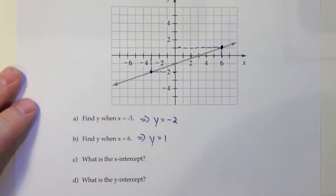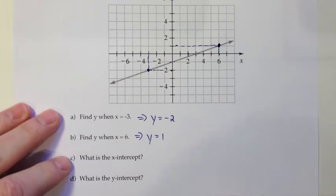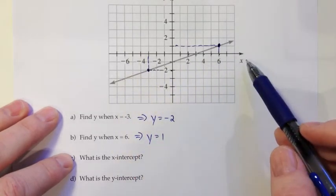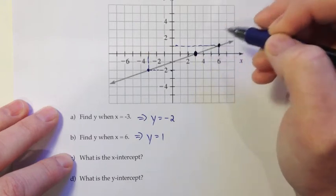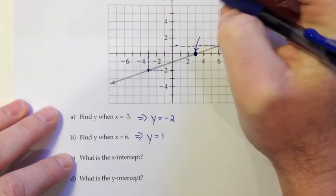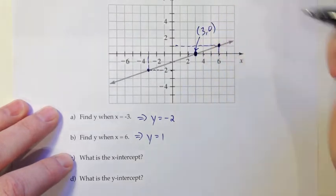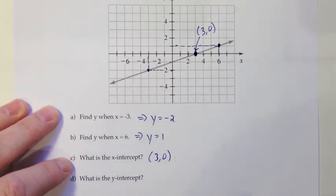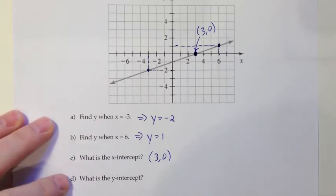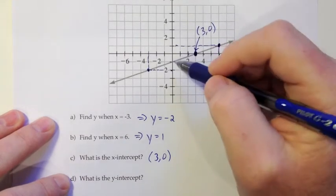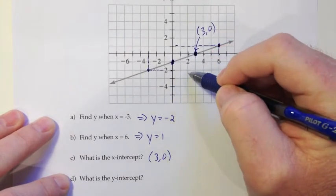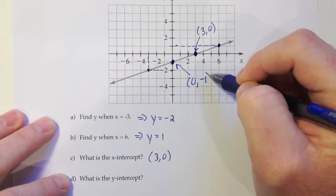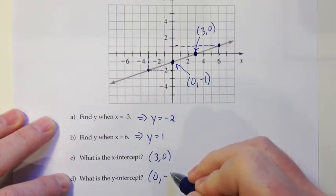And next, they want us to find something called the x-intercept and the y-intercept. So the x-intercept is the ordered pair where our linear model intersects the x-axis. So the x-intercept seems to be this point right here. And if we were to label that, that looks like that would be over 3 and up 0. So that would be our x-intercept, the ordered pair (3, 0). And that's really important. We always write our intercepts as ordered pairs. The y-intercept of our graph would be the spot where our linear model hits the y-axis. And that seems to be this point right here. And that point is over 0 and down 1. So we'd say it's (0, negative 1). And that's the way we'd write our answer for the y-intercept.